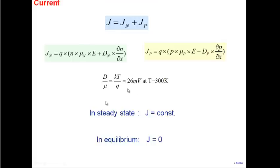In steady state, current must be constant throughout the semiconductor — otherwise charge would pile up and quantities would change with time, violating the definition of steady state. At equilibrium, current equals zero; there is no current inside the device. These equations and concepts from the last lecture set up today's discussion on gaining useful insights into a semiconductor.